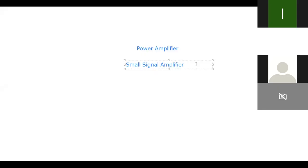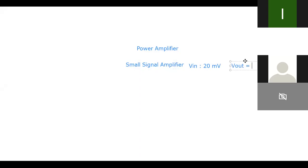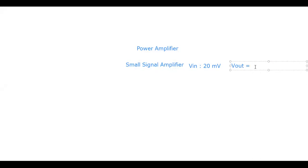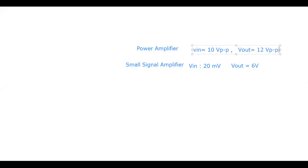We have studied small signal amplifiers and now we need to see the contrast with power amplifiers. In a small signal amplifier, the input required was very small, around 20 millivolts, and the output was limited to around the DC power supply, say 6 volts. In a power amplifier, we require an input of around 10 volts peak to peak, and the output may be around 12 volts peak to peak.